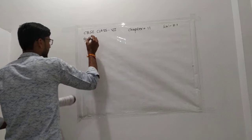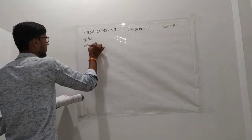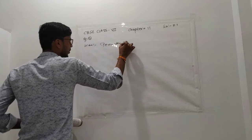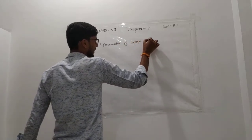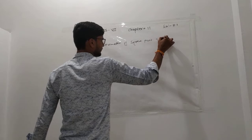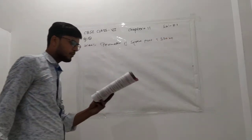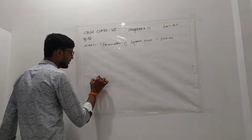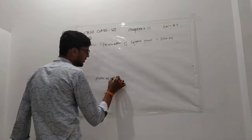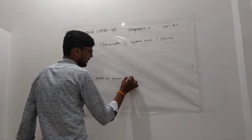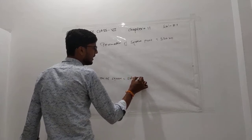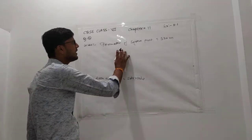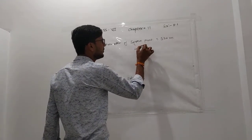Question number two: what is given to us? Perimeter of square plot equals 320 meters. We need to find the area of the square. Area of square is side into side. So first we find the value of side. Perimeter of square is 4 into side.